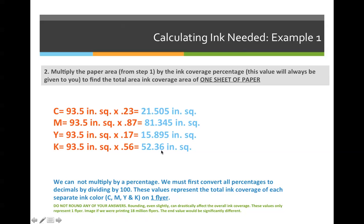Do not round any of these values. If you round the values, it will drastically throw off the final pounds of ink you need to purchase, because we are still only calculating based on one sheet of paper. If we are printing 8 million sheets and we are off by 0.01, we are off by a lot more than 0.01 when you multiply that by 8 million.